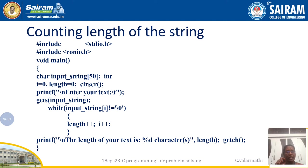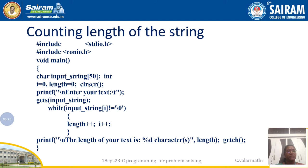When the condition is true, I increment length and also increment the counter variable i. Length stores the correct final length of the string, and i is used to traverse until null is reached. After the while loop finishes, length holds the exact number of characters in the string, which is then printed using printf as: 'The length of your text is %d characters', with length.